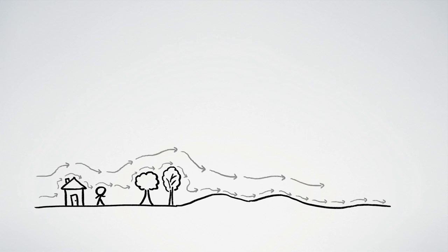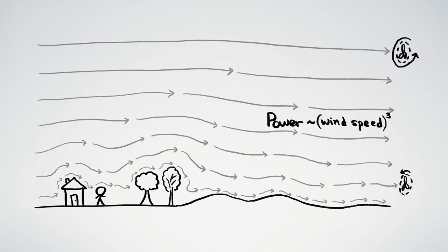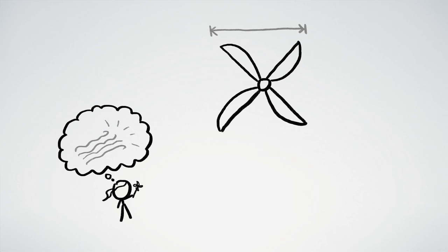Plus, the higher up you go, the less the wind itself is impeded by stuff on the ground, the faster it blows, and therefore the more wind energy you can capture. So for a windmill to have access to air with a lot of energy, it should be giant and tall.